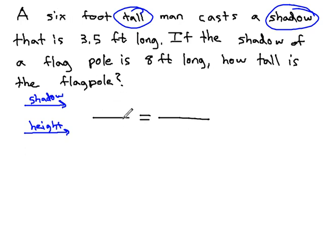Next, we try and fill in a fraction with numbers, no variables, with numbers that relate shadow and height together. We have a 6 foot tall man with a 3.5 foot shadow. Those numbers go together, talking about the same situation. The height of the man is 6 feet, and the shadow of the man is 3.5 feet.